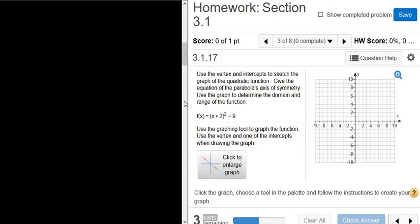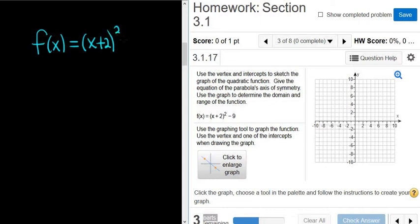In this problem we're given a quadratic function and we have to graph it. So we have f of x equals parentheses x plus 2 quantity squared minus 9. And if you look down here it says use the graphing tool to graph the function. Use the vertex and one of the intercepts when drawing your graph.